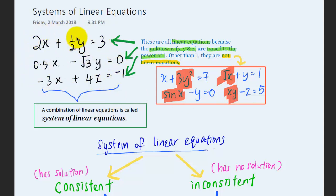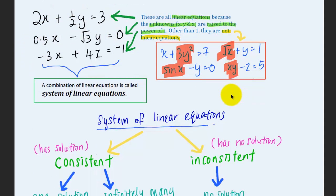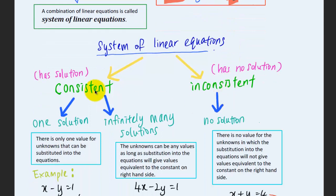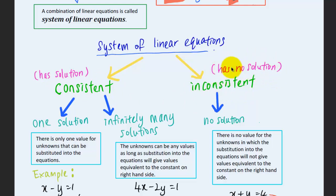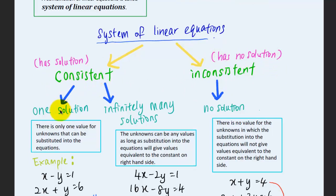When we have three linear equations and combine them together, we get a system of linear equations. For every system of linear equations, there are only three possible outcomes, which can be categorized into two classes. The first is consistent, which means there is a solution. The second class is inconsistent, which means there is no solution.